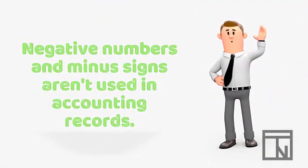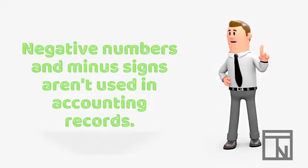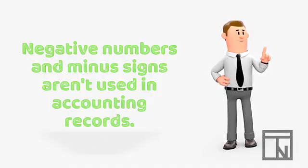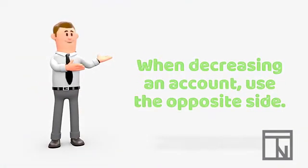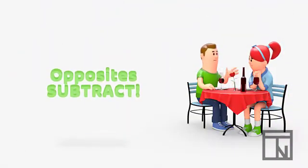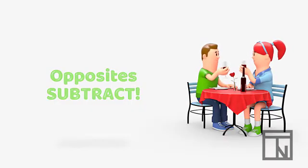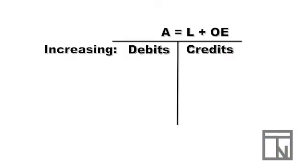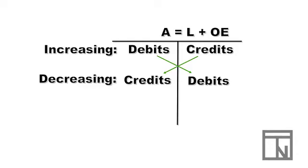Now we know that debits increase assets and credits increase liabilities and owner's equity. But what happens if we want to decrease an amount? We already decided that we can't use negative numbers, so a negative debit won't work. Instead, when we need to decrease an account, we use the opposite of the increasing side. You may have heard that opposites attract — well, in accounting, opposites subtract. So, if an asset goes up with a debit, then it goes down with a credit. And if a liability or owner's equity account goes up with a credit, then it goes down with a debit.